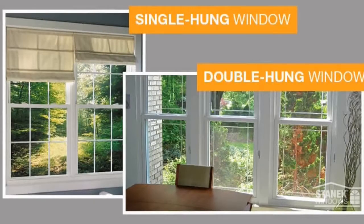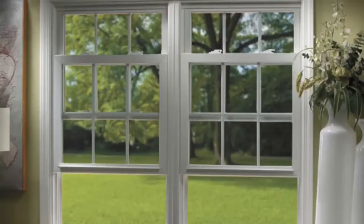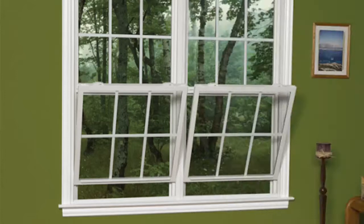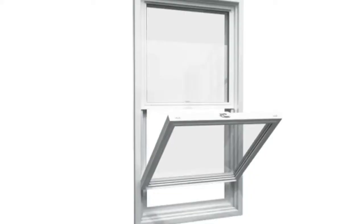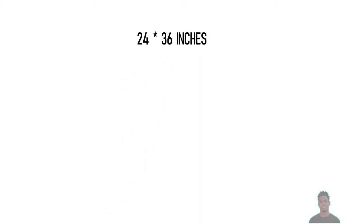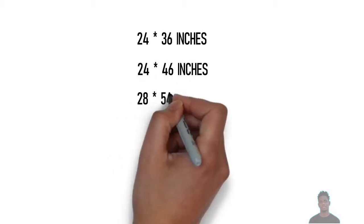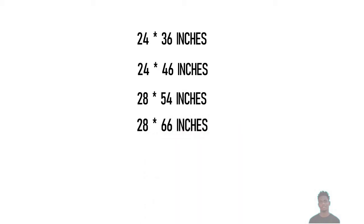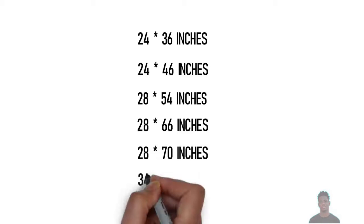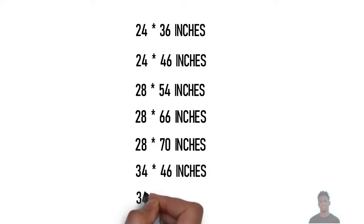Single-hung windows, along with double-hung windows, are the most common and basic windows. Single-hung windows look like two windows attached and mounted vertically. This type of window is one where we either slide up or open one pane while the other pane remains stationary. Standard single-hung window sizes are: 24x36 inches, 24x46 inches, 28x54 inches, 28x66 inches, 28x76 inches, 28x70 inches, 34x46 inches, and 34x62 inches.